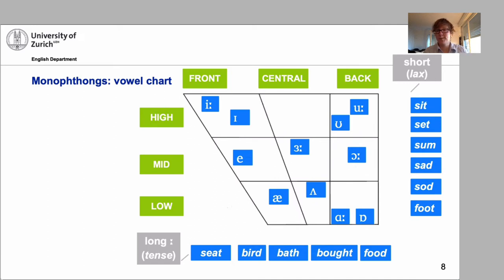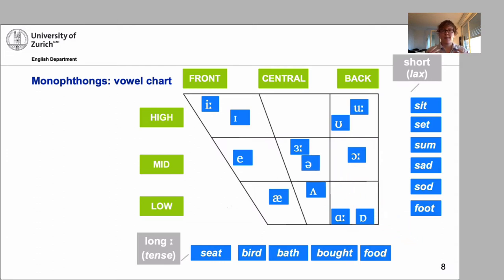Then there is one special sound — the schwa. It's a bit special because it is not systematically represented by any letter. If you think back to our discussion on orthography versus pronunciation, the other sounds tend to have a dominant orthographic representation even if it's not straightforward. But the schwa is not represented by any single letter — it can represent the spelling of any of the other vowels. The schwa is a mid central vowel, the position when your tongue is in its most neutral, relaxed position, similar to the 'bird' vowel.